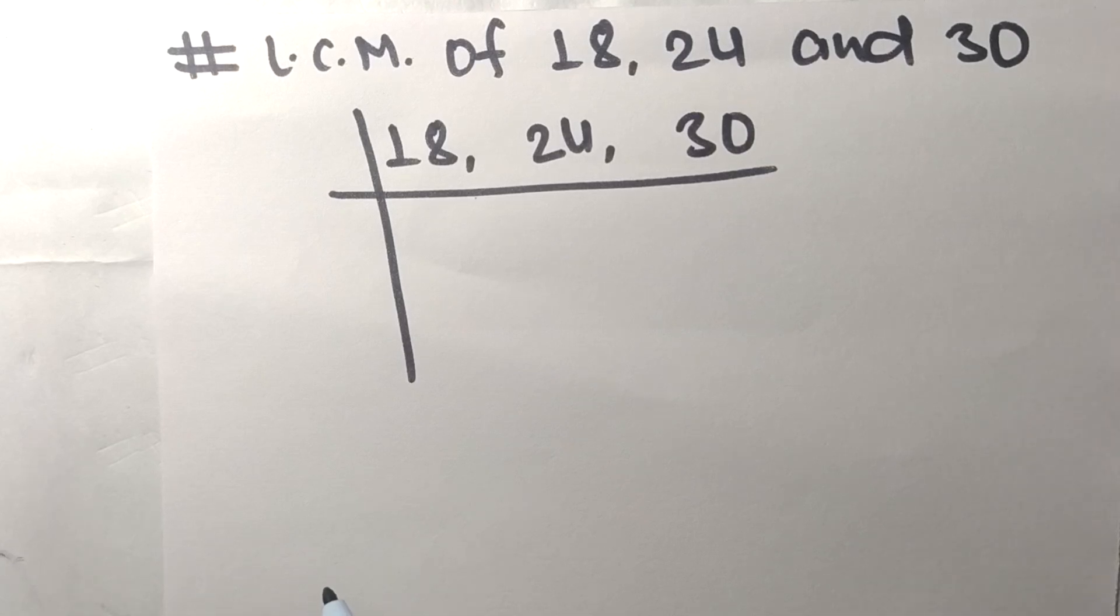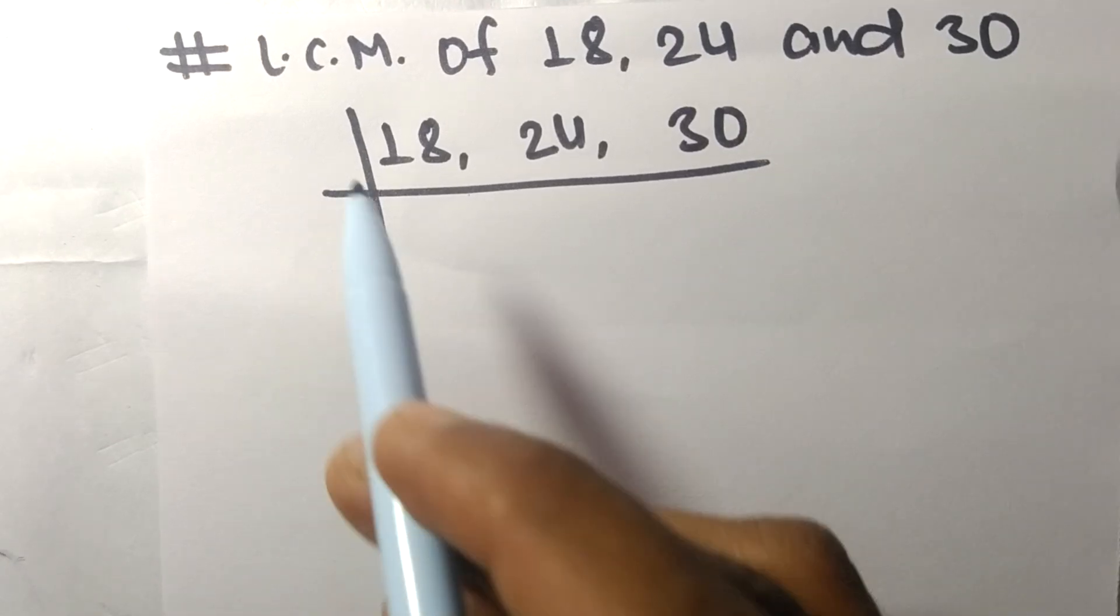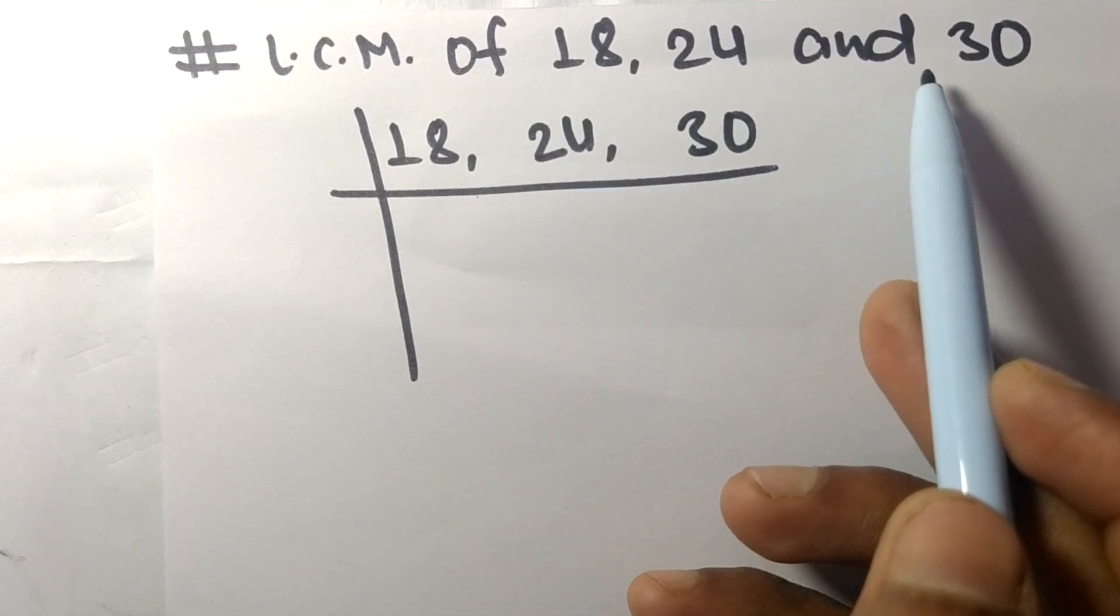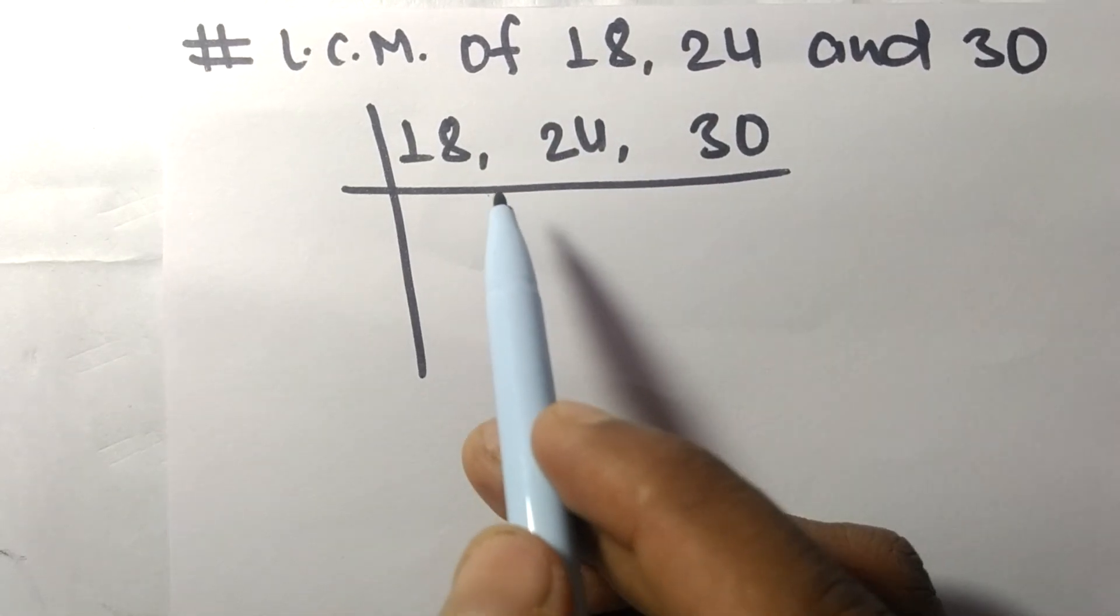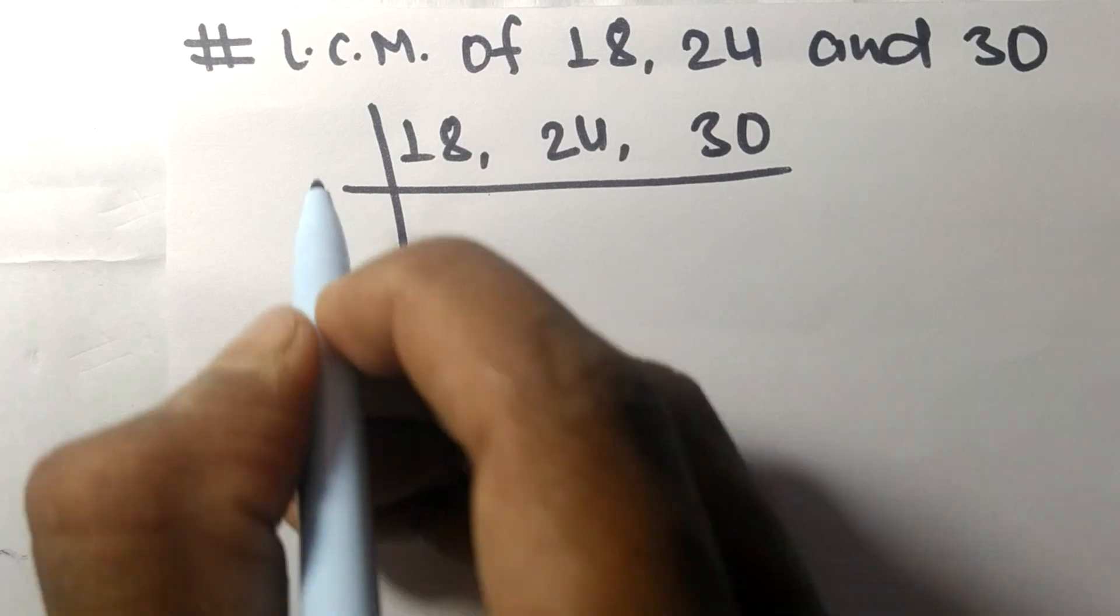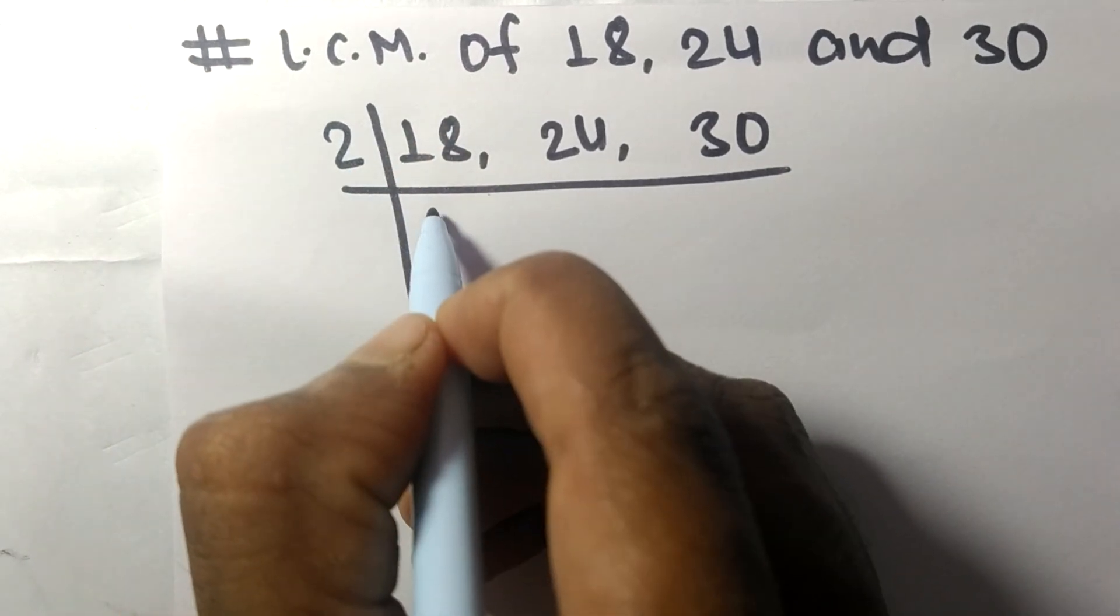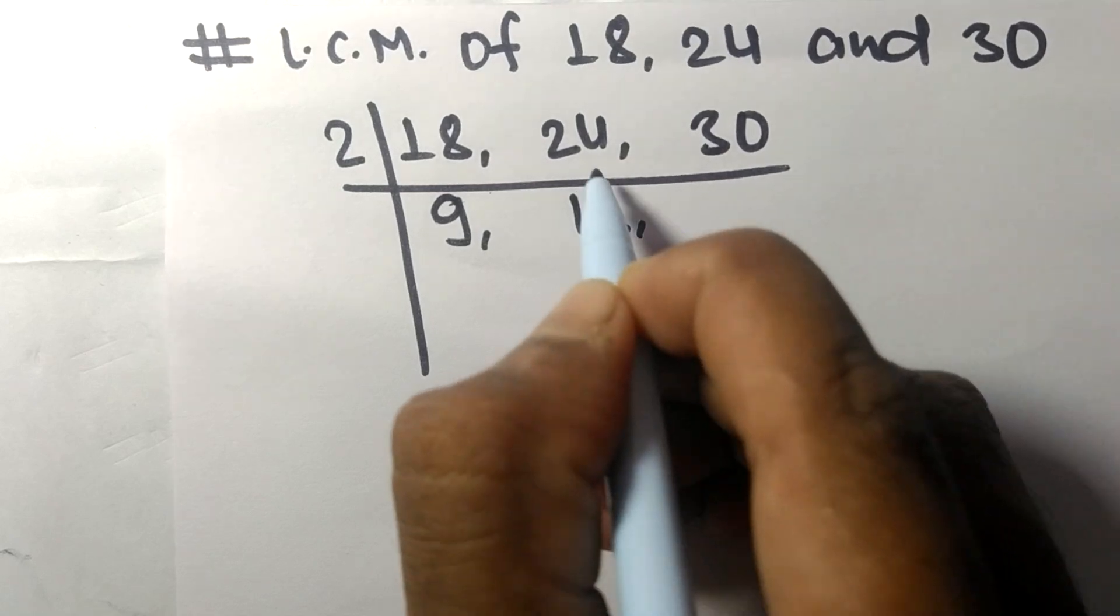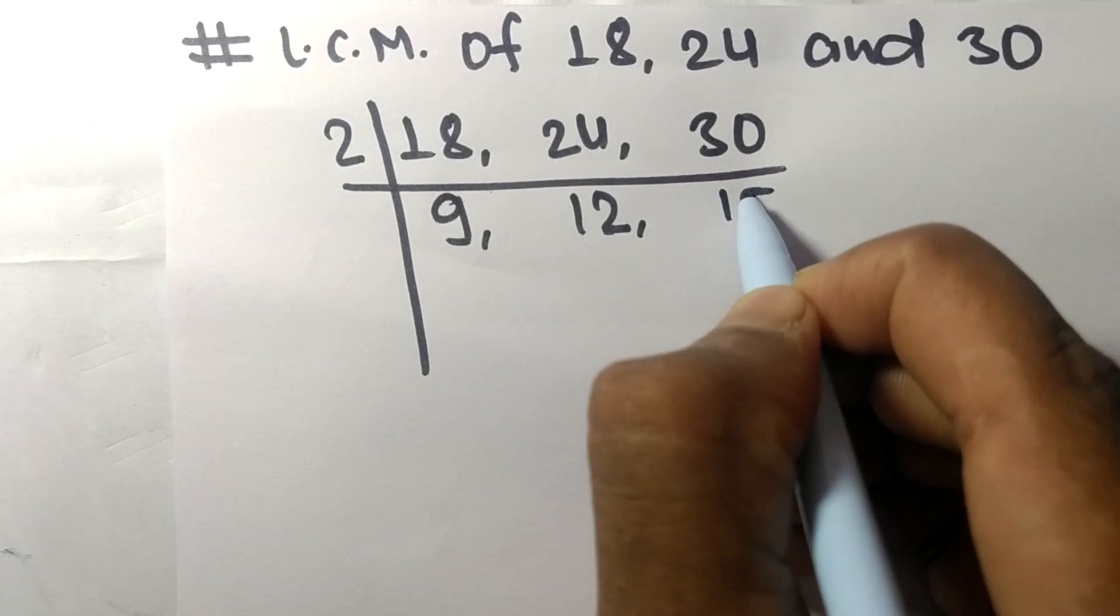So today in this video we shall learn to find the LCM of 18, 24, and 30. These all numbers are divisible by 2, so 2 times 9 means 18, 2 times 12 means 24, 2 times 15 means 30.